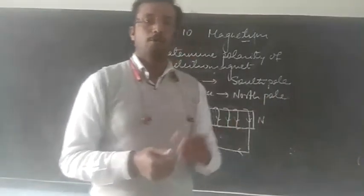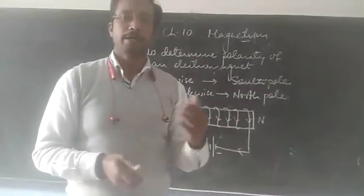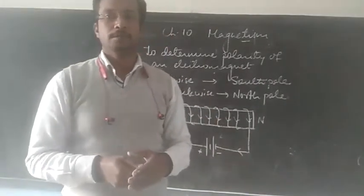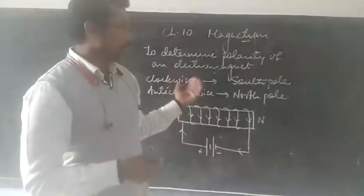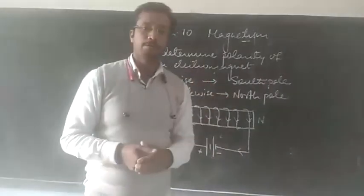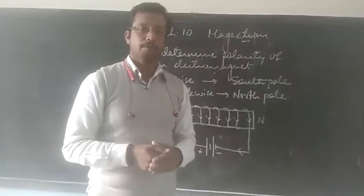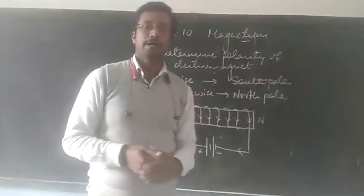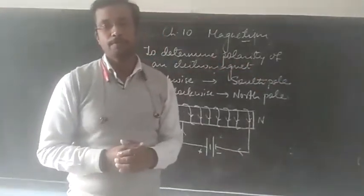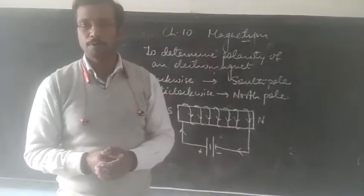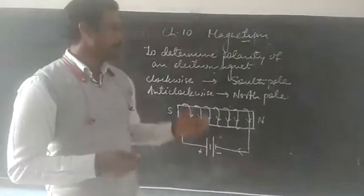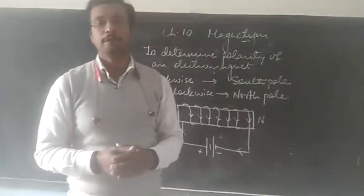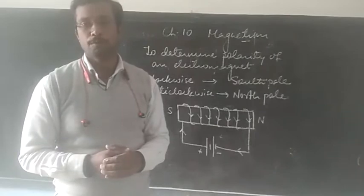So, I hope it is clear. We can determine, using the direction of the current flowing — if it enters clockwise, the end of the magnet will be a south pole, and if it enters anti-clockwise, the end will be a north pole.